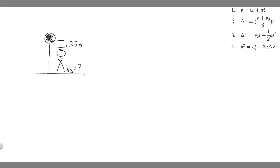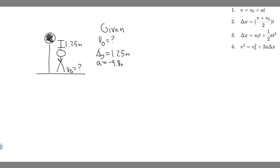We're going to solve this using kinematics. Write down your given kinematic variables. We want to find v-sub-zero, the initial velocity — that's what we're solving for. We know the change in y is 1.25 meters, how much he travels in the y-direction to touch the ball. We also know the acceleration is minus 9.8 meters per second squared, because this is a free fall problem — gravity acts downward, opposing his upward motion.